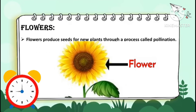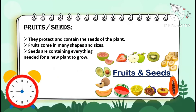Flowers produce seeds for new plants through a process called pollination. Fruits protect and contain the seeds of the plant. Fruits come in many shapes and sizes. Seeds contain everything needed for a new plant to grow.